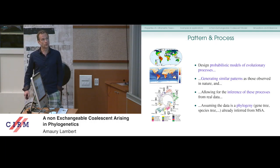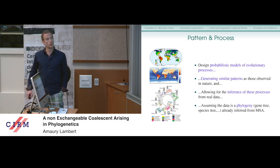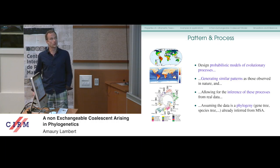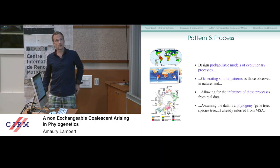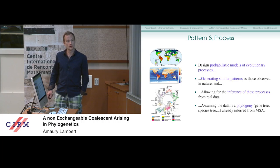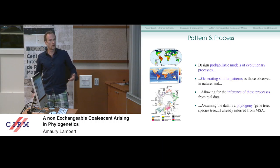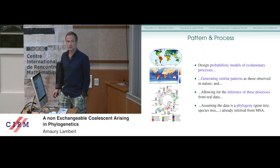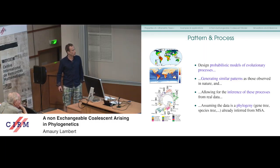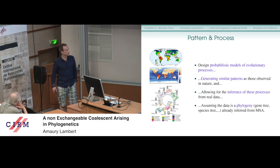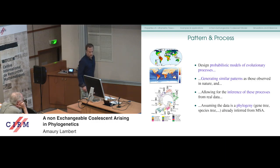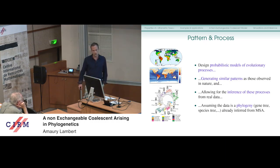Most of us here in this room do one of these: design probabilistic models of evolutionary processes, generating similar patterns as those observed in nature, as Steve emphasized, and allowing for the inference of these processes from real data. In this talk, I will assume that the data is a phylogeny — a gene tree or species tree already inferred from a multiple sequence alignment — so we will study the properties of some ultrametric trees.